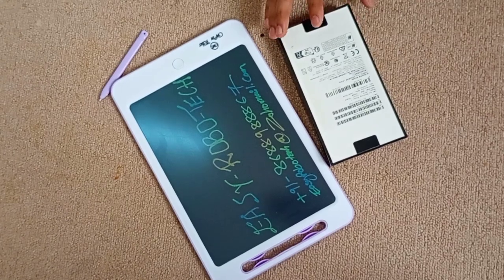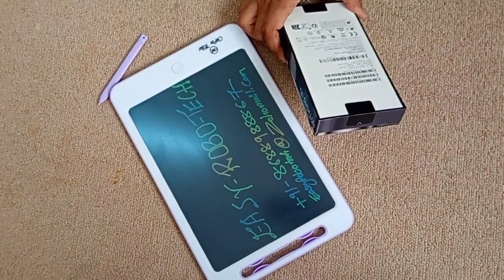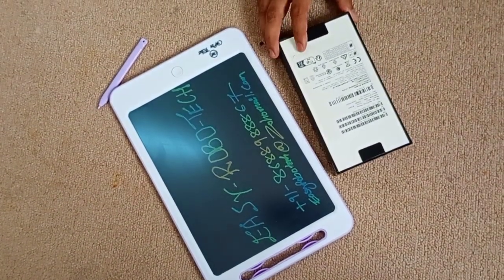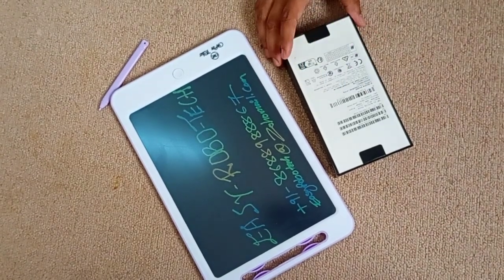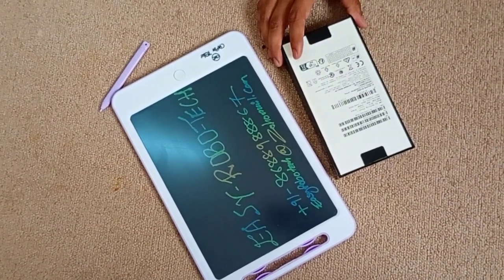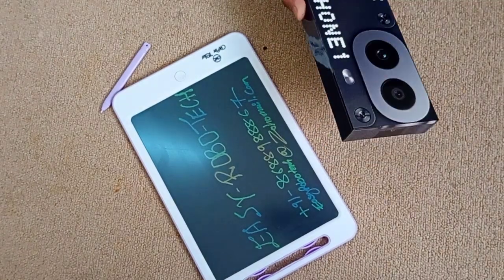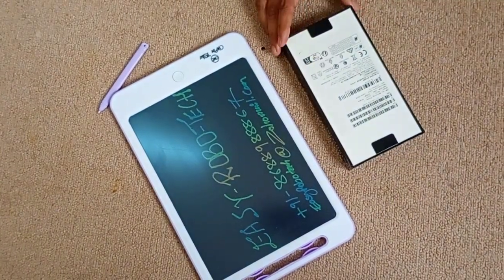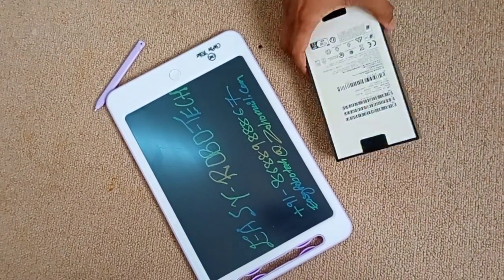Here is the box for the NothingPhone 1CMF. It's quite minimalist, reflecting Nothing's distinctive approach to design. The box is sleek and elegant, with just the brand logo and a hint of the phone's futuristic design peeking through.